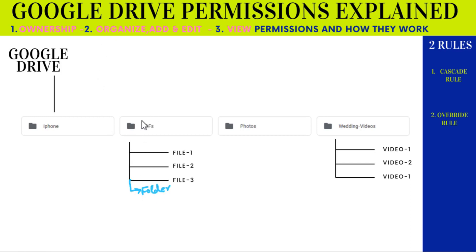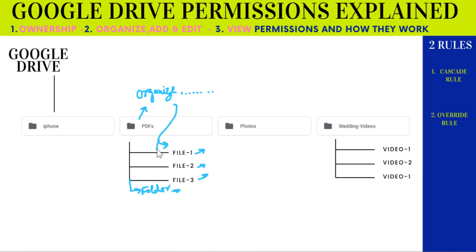For example, if I assign organize plus add and edit permission to a folder, that person will be able to organize all the files inside and also any subfolders and all the files within them. So the same permission transfers from the top level to all the lower levels — this permission goes from top to bottom. The second rule is the override rule.